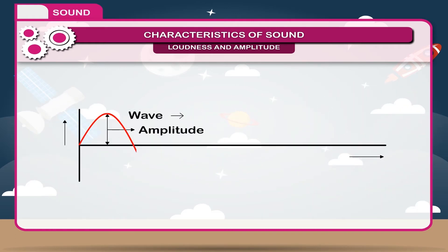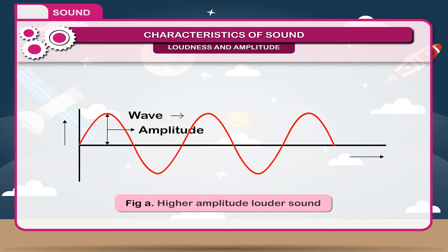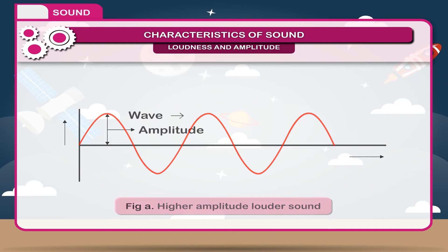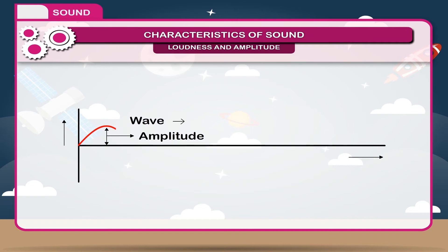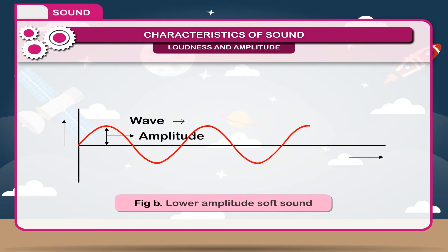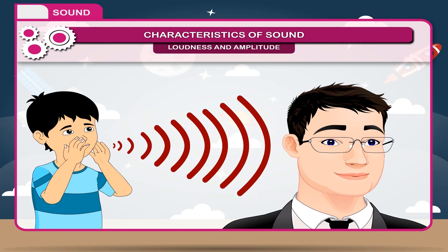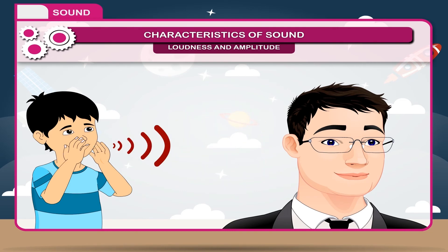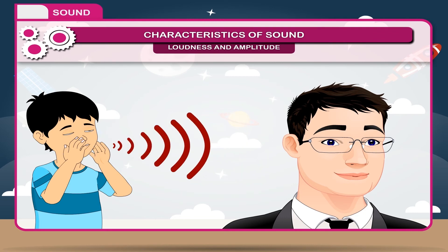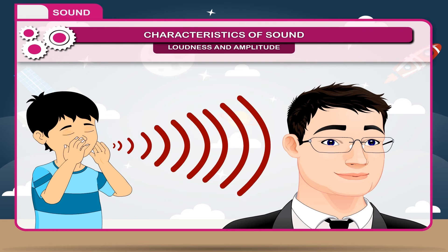Higher the amplitude, louder will be the sound, as shown in figure A — higher amplitude, louder sound. Lower the amplitude, softer will be the sound, as shown in figure B — lower amplitude, soft sound. Loudness also depends on the distance between the source and observer, the surface area of the vibrating body, the density of the medium, and the presence of resonant bodies.